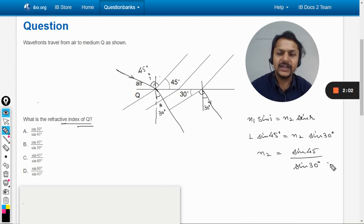But we are not going that way because we need the answer in terms of angles. So 45 by 30. So the answer is B. So my dear students, first of all be very careful.